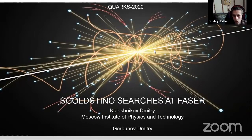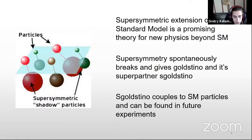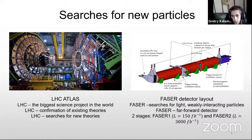A few words about supersymmetry itself. At some point in any supersymmetry model it is broken spontaneously, and it gives birth to goldstino particles that can interact with standard model particles and therefore can be found at experiments. Such experiments take place at LHC, and in particular the FASER experiment, which is specifically designed for these searches.